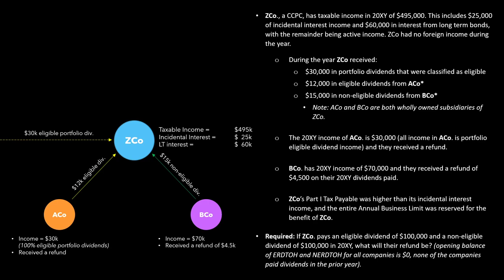Note that the opening balance of all RDTOH accounts is zero for all companies, and none of the companies paid a dividend in the prior year. What we are talking about now is: if ZEDCO has shareholders, what is the refund going to be when ZEDCO pays a $100,000 eligible dividend and a $100,000 non-eligible dividend to those shareholders? Let's start to work this out by focusing in on ZEDCO.